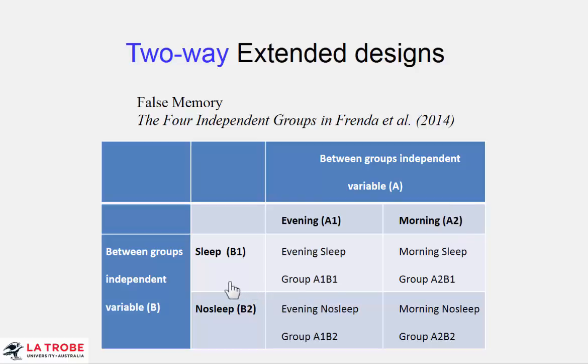The main effect for A is A1 versus A2, evening versus morning. Similarly, for independent variable B, it is overall sleep versus no sleep, B1 versus B2. In a two-way design we have an additional possibility: we can look at the interaction between the two variables. This allows us to ask more complex, subtle, and interesting research questions, and it's really the main reason for including two independent variables in a study. We want to know not just the overall effect of evening/morning or sleep/no sleep, but the way they interact.